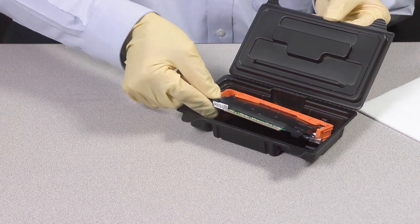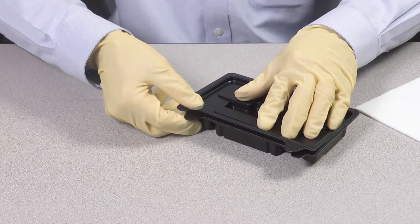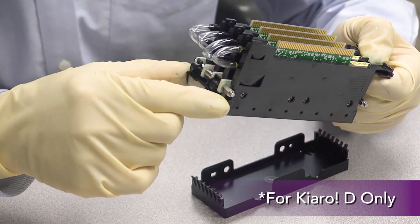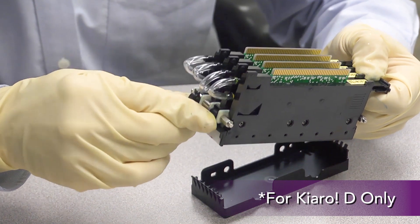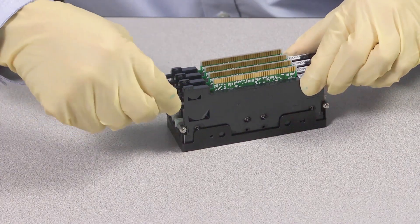For shipping or transport, clip the old print head into the orange casing and place it into the packaging from the new print head or simply discard the old print head. For Kiaro D print heads, reattach the scraper over the spacers. Remove the tubes from the print head.